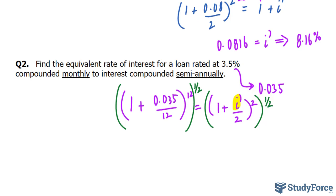So what this will do is it will cancel out these two exponents, leaving us with 1 plus I prime over 2. And on the left side, we can actually simplify those two exponents. Applying the exponent laws, you multiply. So 12 times half is 6. We have 1 plus 0.035 over 12 raised to the power of 6.